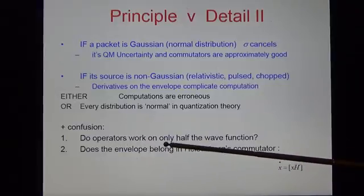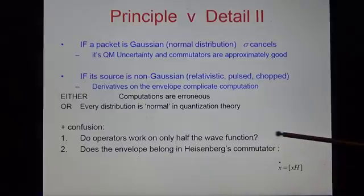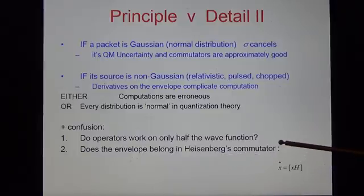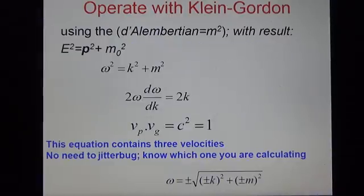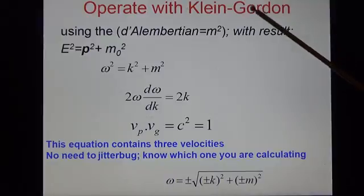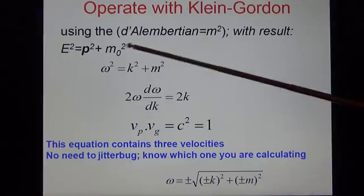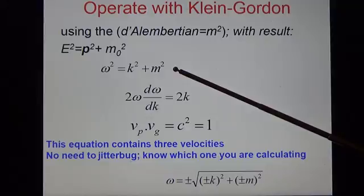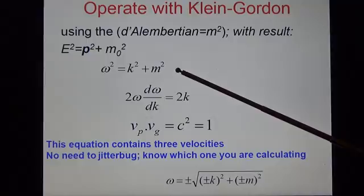Do operators work on only half the wave function and not on the envelope part? Does the envelope belong in Heisenberg's commutator, which I call the jitterbug equation, for the following reason? One of the simplest things you can do with a stable wave packet is to operate on it with the Klein-Gordon equation, the relativistic version for a free particle in zero field. And the result is an algebraic equation in second order. You can derive this equation in other ways, too. But it has a very important property, if you differentiate it, a property new to relativity.